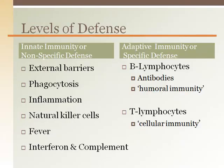The immune system can be separated into two different levels. The first level is called innate immunity or nonspecific defense. The components of this level are always ready and work to generally prevent invasion from antigens. The second level is adaptive immunity or specific defense. This level contains cells that must be trained to attack specific antigens, which can take several days. This level is what we target when we get immunization so that our bodies can be ready to fight that particular antigen right away.